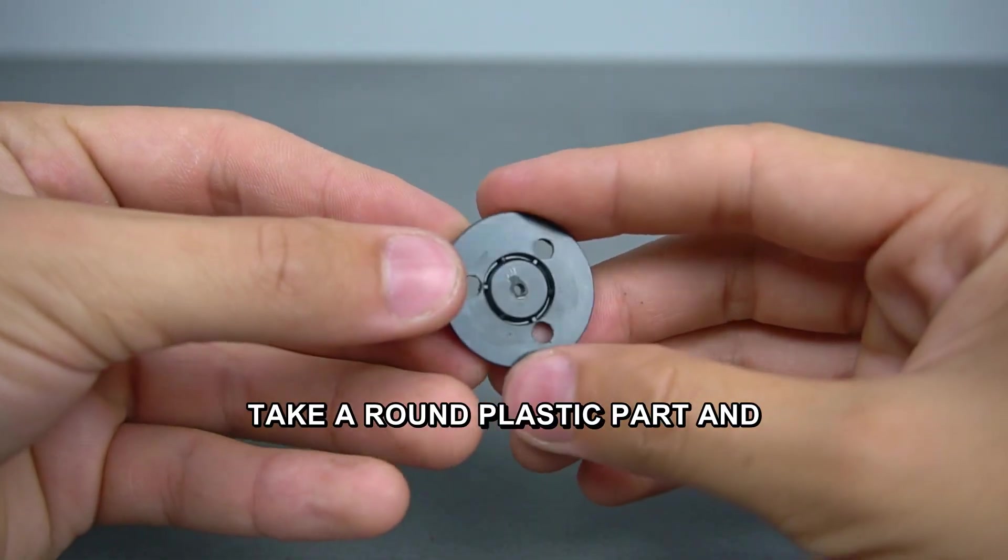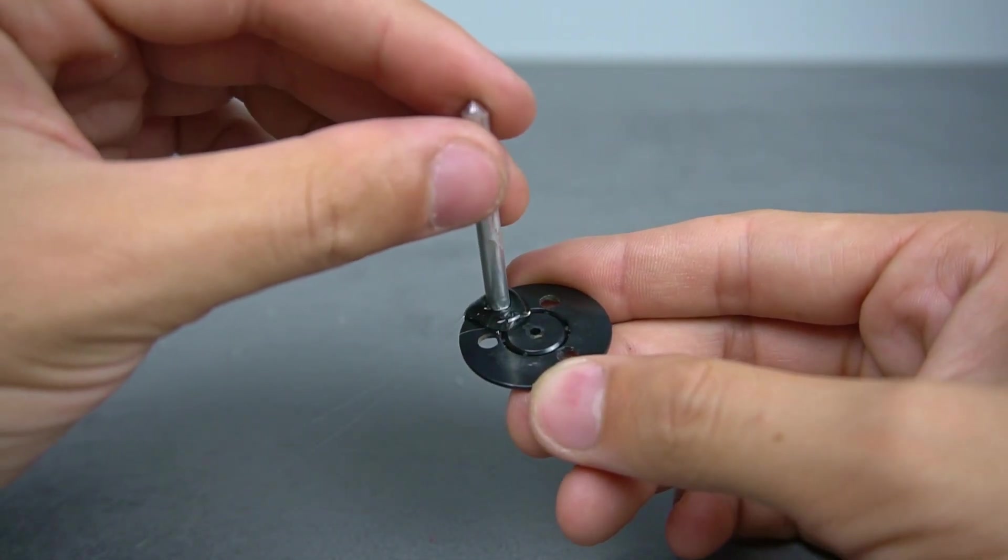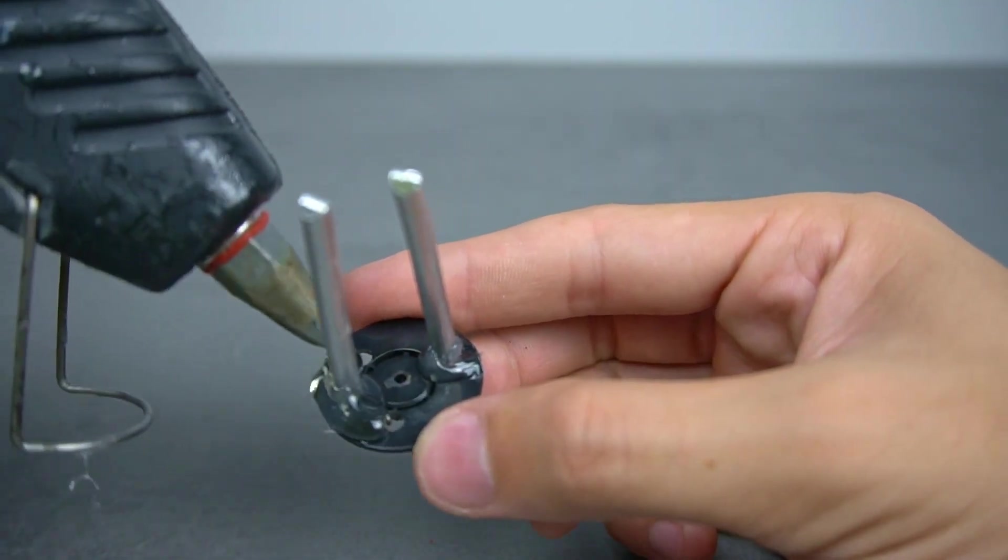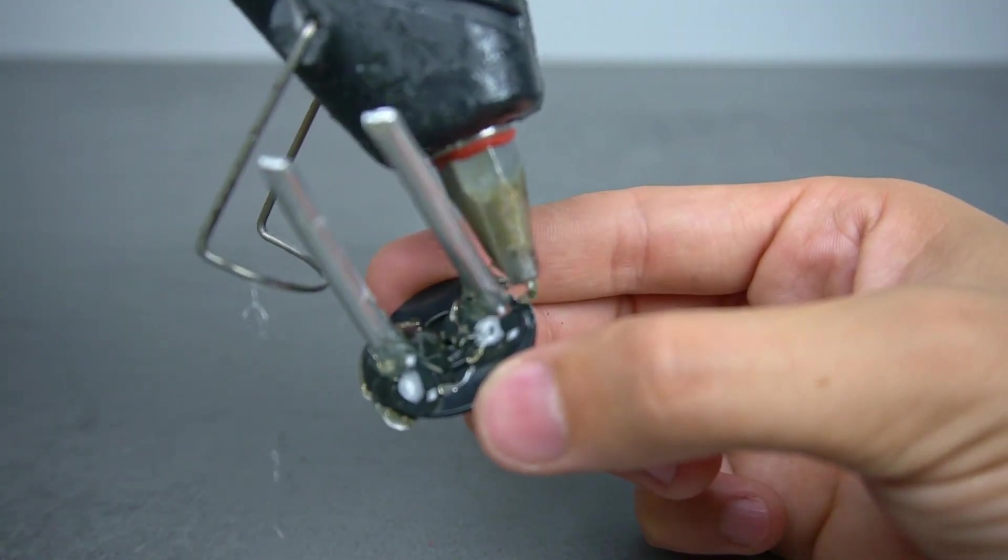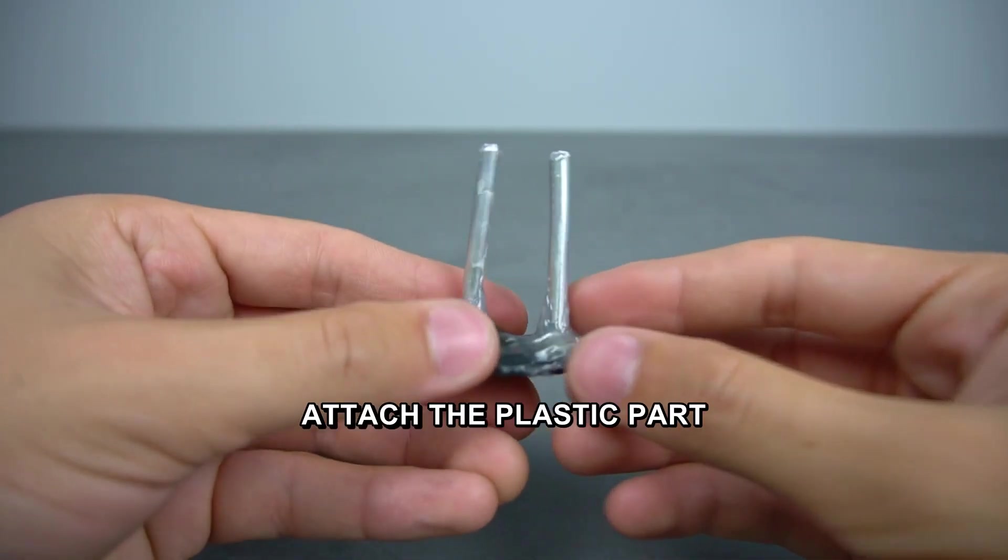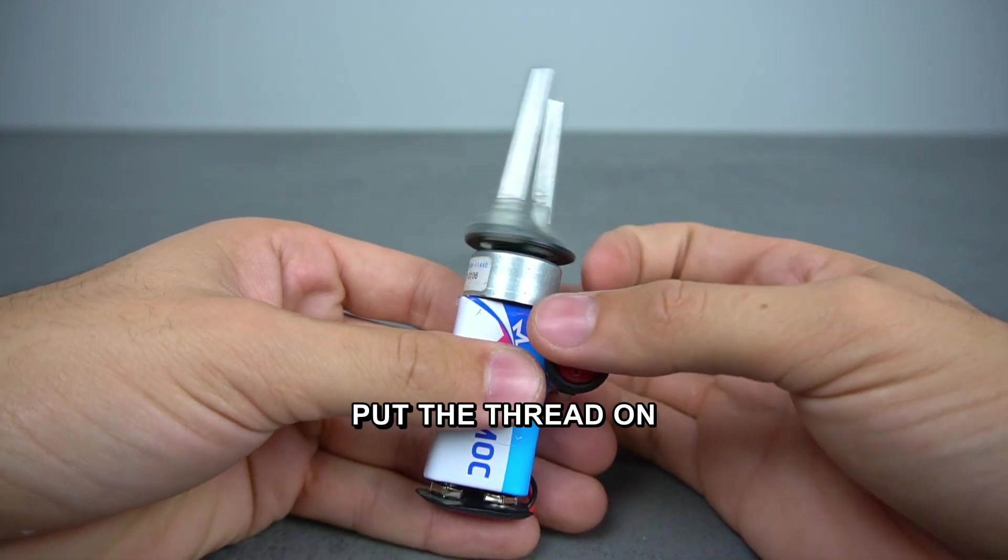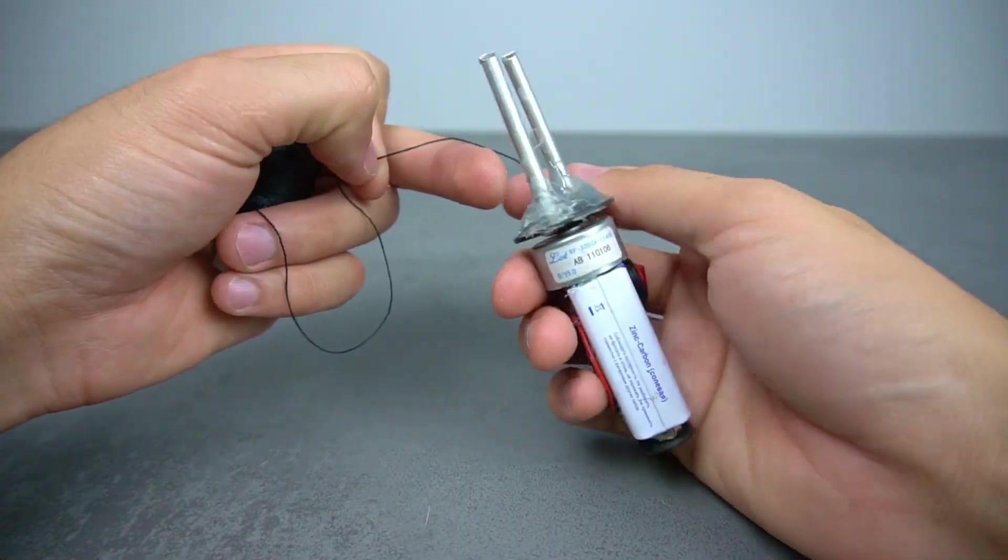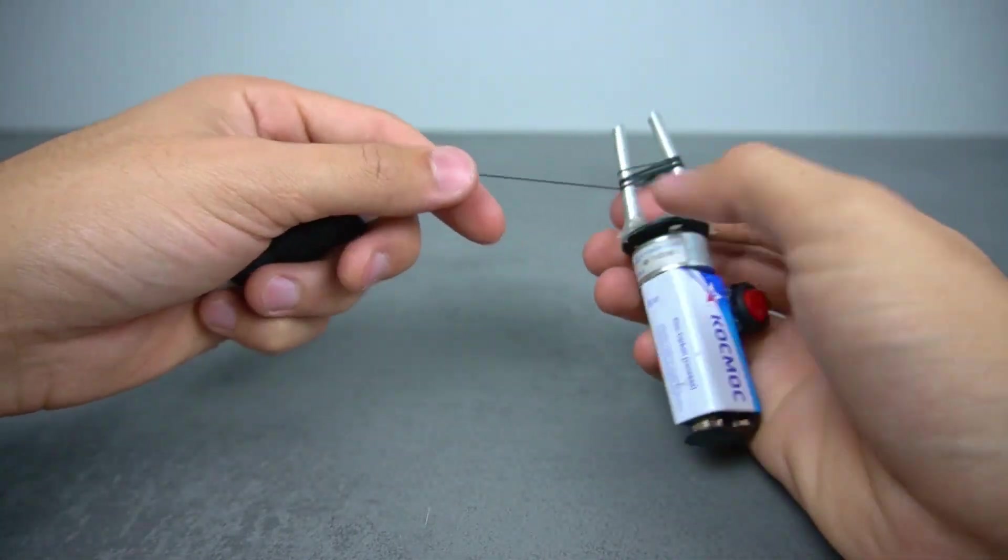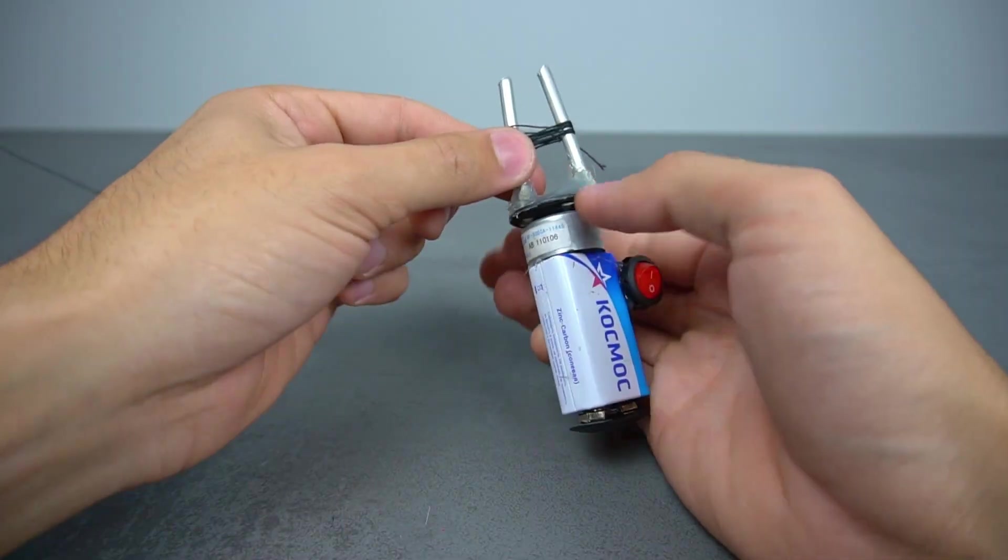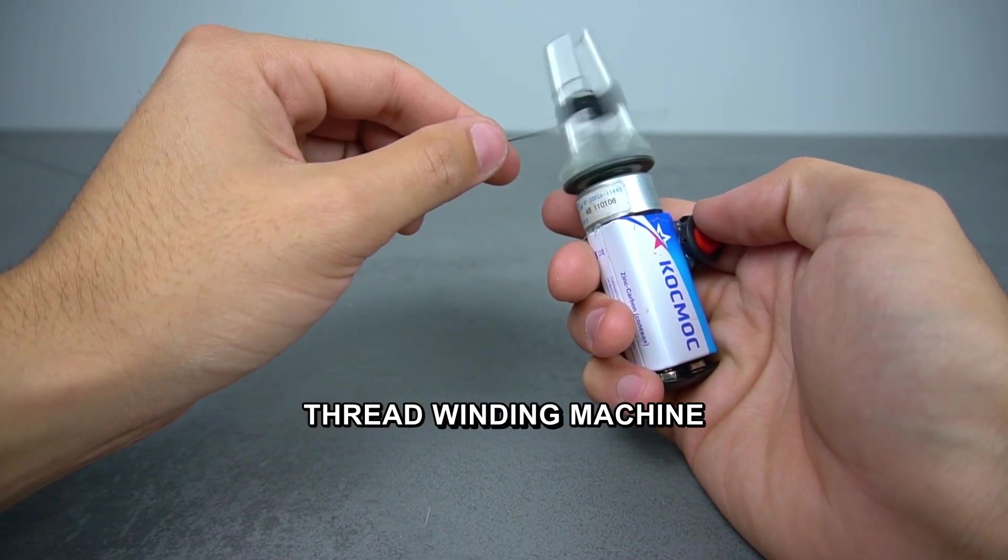Take a round plastic part and glue two short pieces of thick wire to it as guide rods. Attach the plastic part with rods to the motor shaft. Put the thread on the guide rods. Turn on the device. You've got a compact motorized thread winding machine.